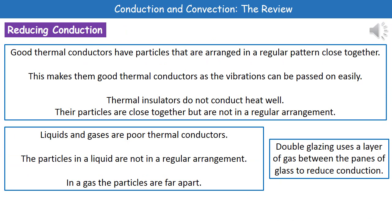If we consider reducing conduction, the first thing we need to understand is what makes a good thermal conductor. The key property is that they've got particles arranged in a regular pattern, very close together. That means it's very easy for the vibrations to be passed from one particle to the next. If we consider a thermal insulator — the ones that don't conduct heat well — their particles are close together but not in this regular arrangement.